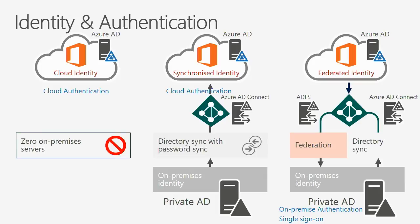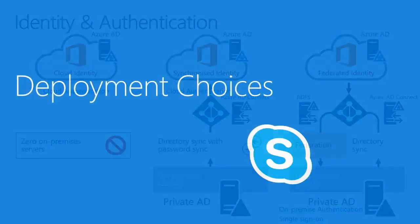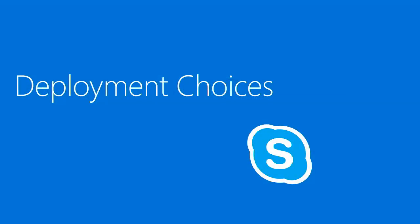There are no right or wrong choices. You really need to evaluate your current environment and your compliance requirements. Some customers tell us they cannot synchronize data across the public internet — there's a variety of requirements. But you need to consider one of these options if you are willing to deploy and consume online services. Once we address that — we have online, we have identity, we have authentication — let's have a look at the deployment options.